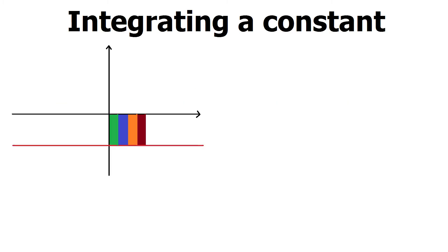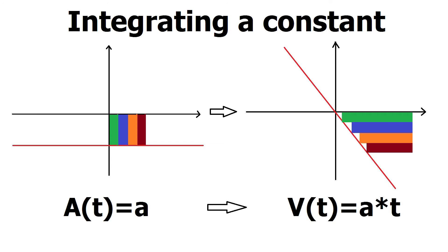We can integrate the constant acceleration once to get the speed of the object. Graphically, this means that we will find a function that consecutively sums up small rectangles under the constant curve acceleration. This new curve is a line and its slope is equal to the constant acceleration. This means that the speed will change the constant amount every second. This is quite intuitive.